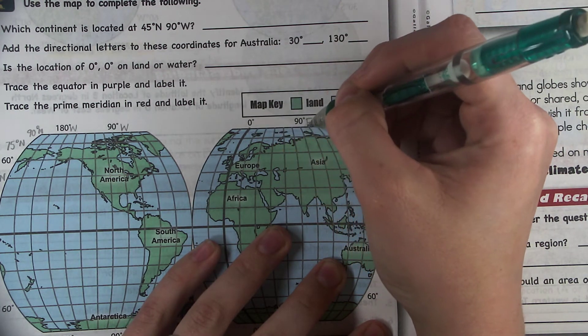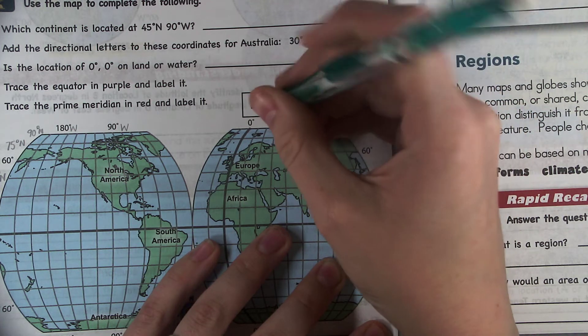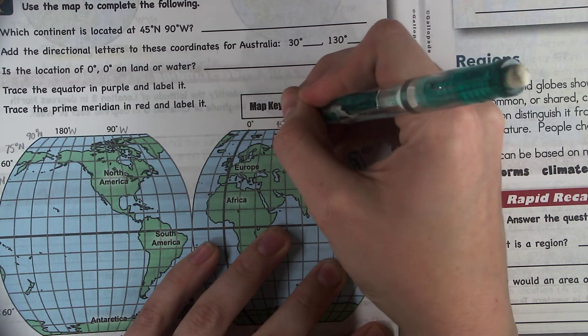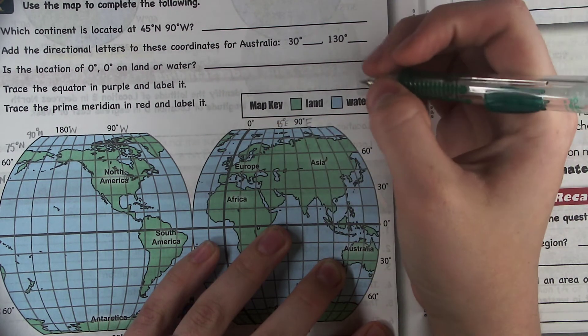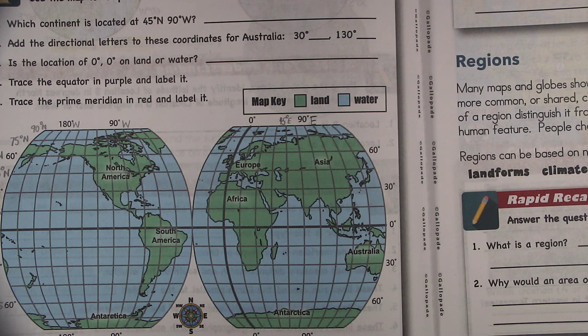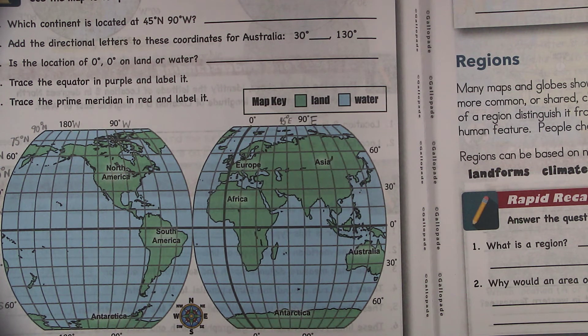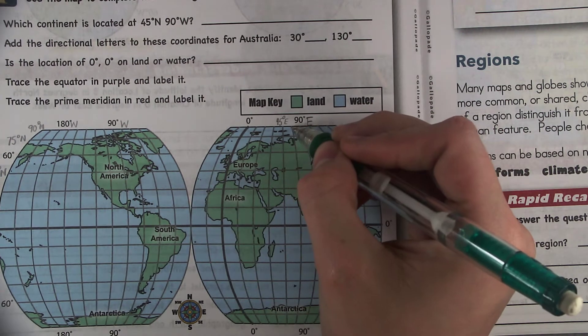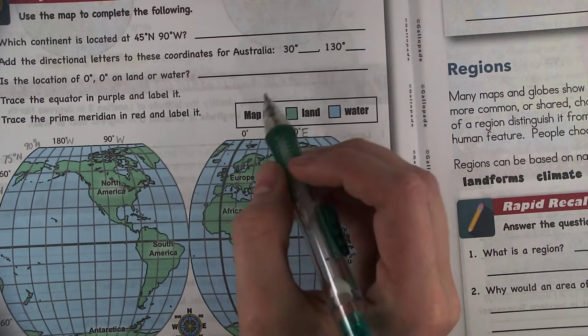And so right here would be 45 degrees east. You don't really have room to write them all. But that would be 45 degrees east right there. And then 60, and then 75, and then 90. So 0, 15, 30.